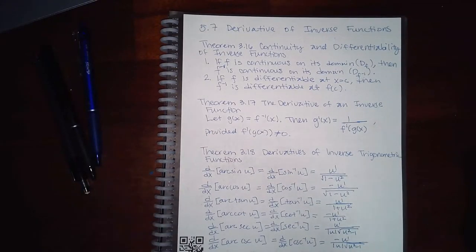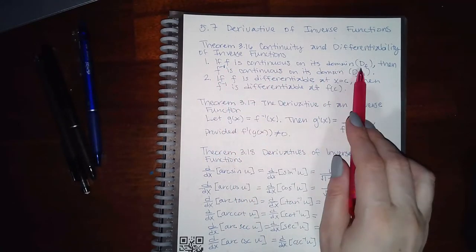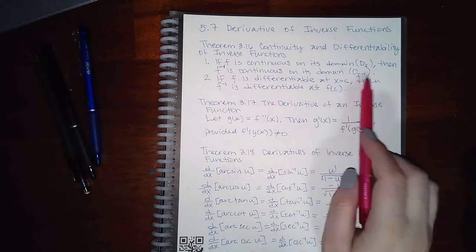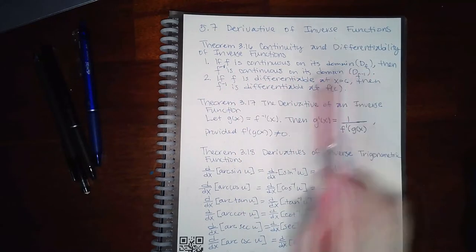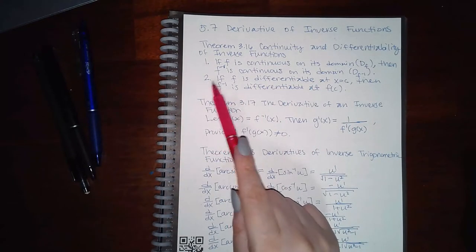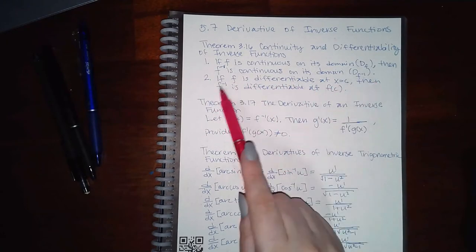This is section 5.7, the derivative of inverse functions. Here we have Theorem 3.16: continuity and differentiability of inverse functions. It says if f is continuous on its domain, then f-inverse is continuous on its domain — which we already know is f's range, by our inverse properties from college algebra.